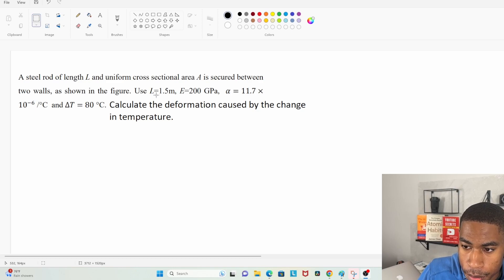E equals 200 gigapascals, we got that. I want to call it sigma but it's not sigma, whatever that symbol is equals 11.7 times 10 to the negative 6 celsius divided by celsius. And you got a change in T equals 80 degrees celsius. Calculate the deformation caused by the change in temperature.